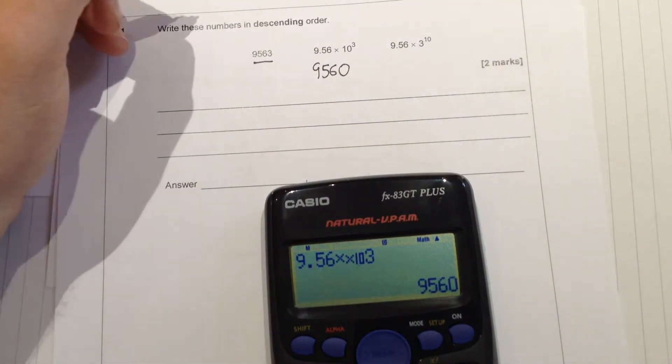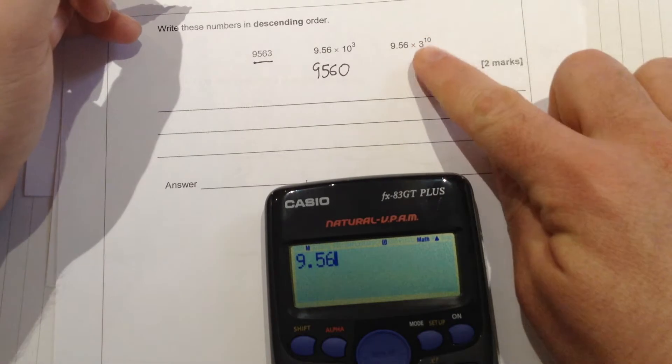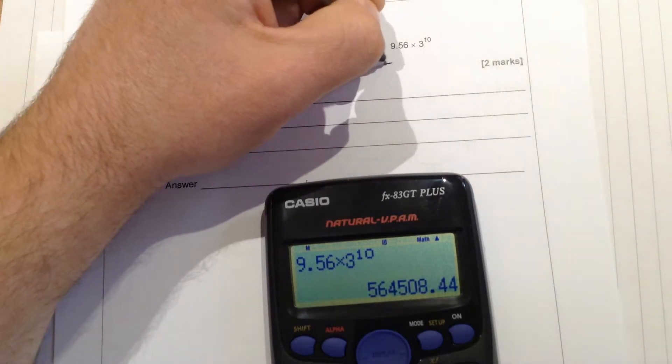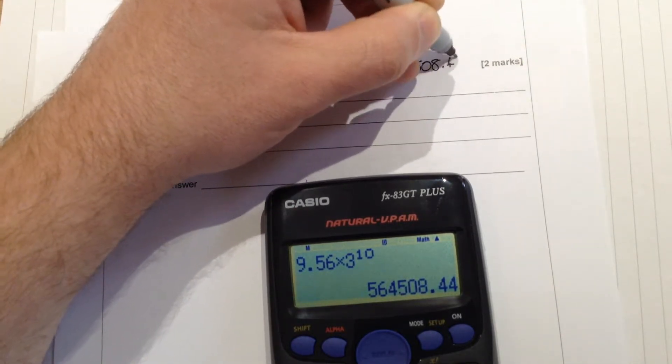The one at the end, again we would just type in 9.56, this time not in standard form, it's times 3 to the power of 10. So if we use the little button on our calculator that means we can do powers, 3 to the power of 10 gives us this large number of 564,508.44.